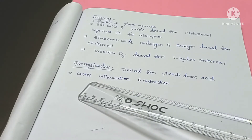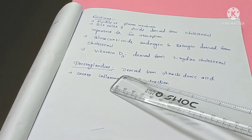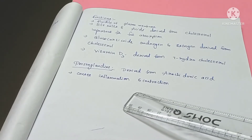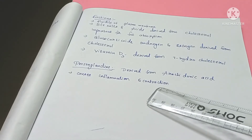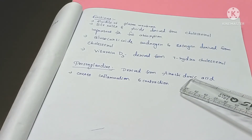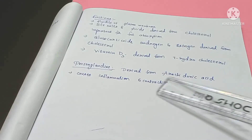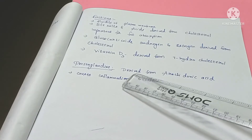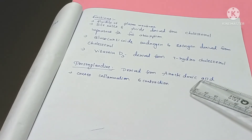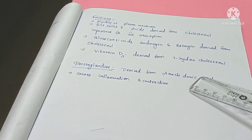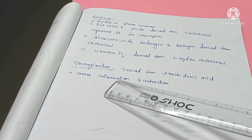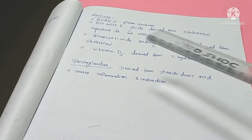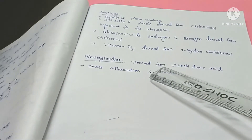Next are prostaglandins, which are polyunsaturated fatty acids derived from arachidonic acid. Prostaglandins are involved in inflammation and contraction. This concludes the topic of lipids.